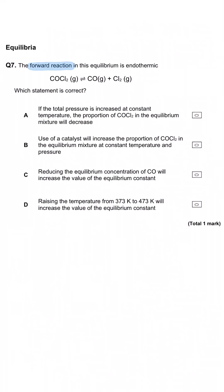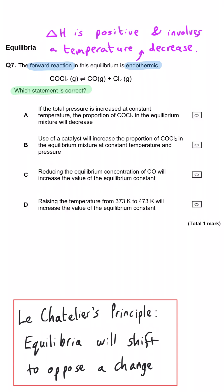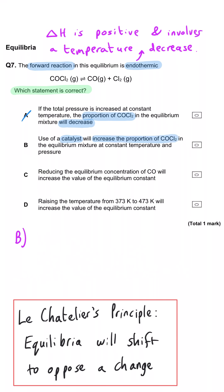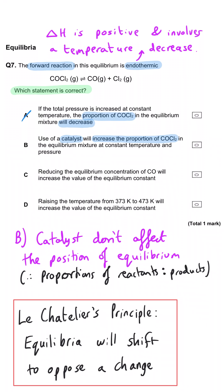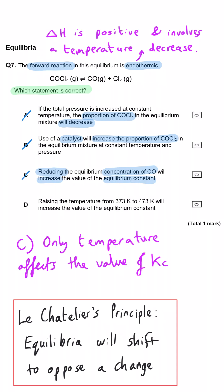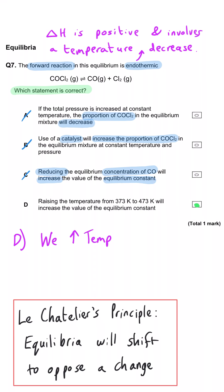The forward reaction in this equilibrium is endothermic. Which statement is correct? If the total pressure is increased at constant temperature, the proportion of COCl₂ will decrease — no, increasing pressure shifts equilibrium left to decrease pressure because there are fewer moles on the left. A catalyst will increase the proportion of COCl₂ — no, a catalyst speeds up forward and backward reactions equally, so the proportion doesn't change. Reducing the equilibrium concentration of CO will increase the value of Kc — no, only temperature affects Kc. So D is correct: raising the temperature increases the value of Kc, as the equilibrium shifts right because the forward reaction is endothermic.